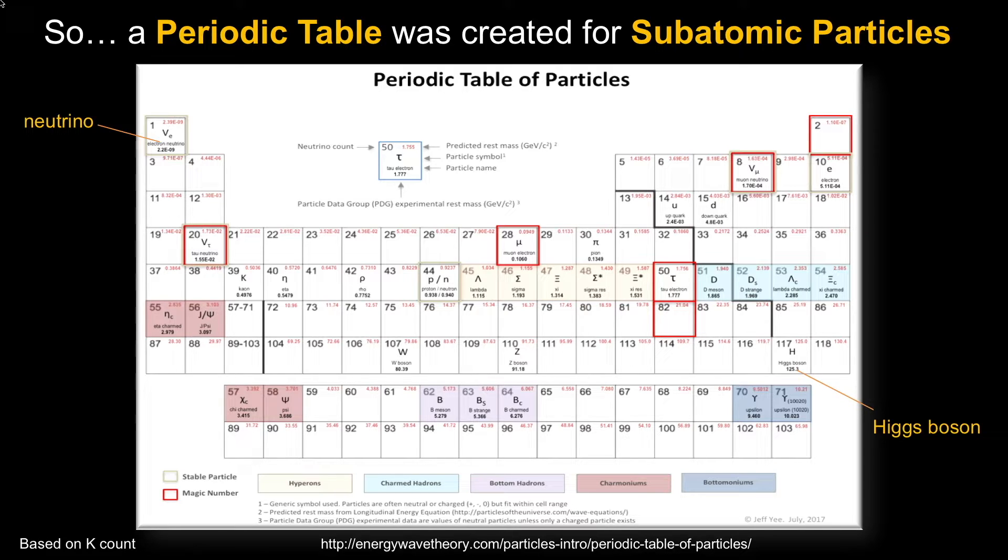You can see it ranging from the neutrino, which takes place in spot number one, equivalent to hydrogen, all the way up to nearly the end of the table is the Higgs. Some of the squares are highlighted in red.